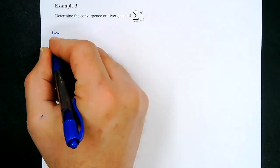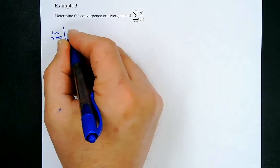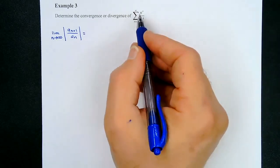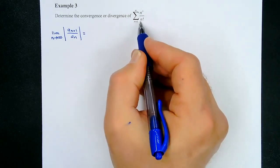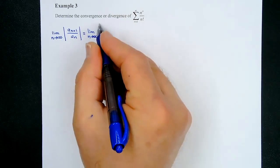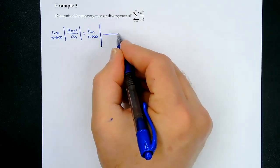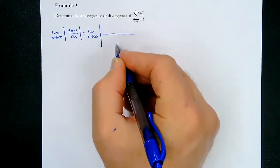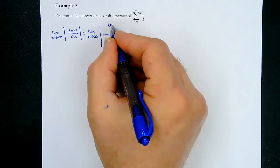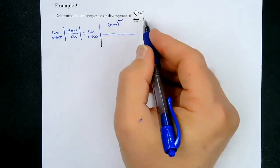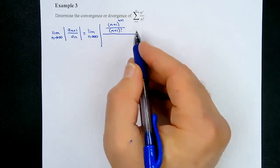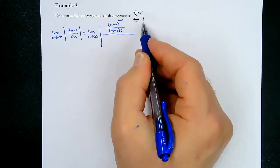Let's apply the ratio test: the limit as n approaches infinity of |a_(n+1)/a_n|. For a_(n+1), the base and exponent are both n+1, and the factorial is (n+1)!. So this becomes the limit as n approaches infinity of the absolute value of [(n+1)^(n+1) / (n+1)!] divided by [n^n / n!].